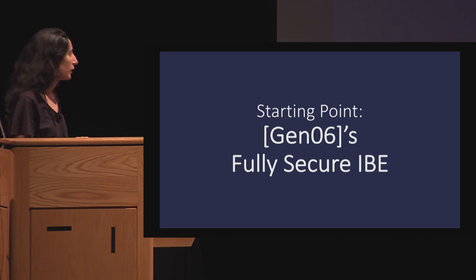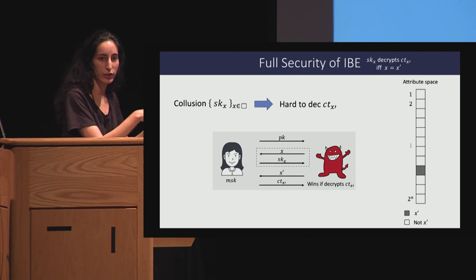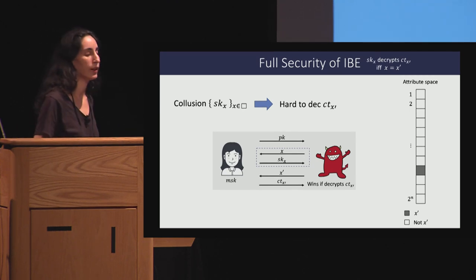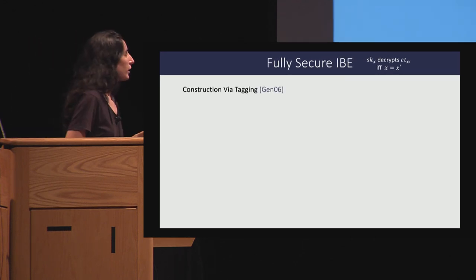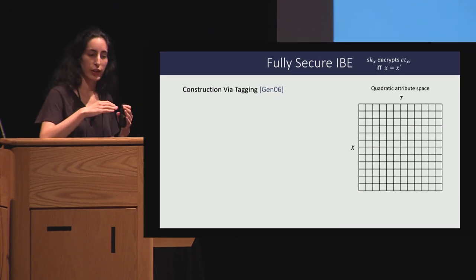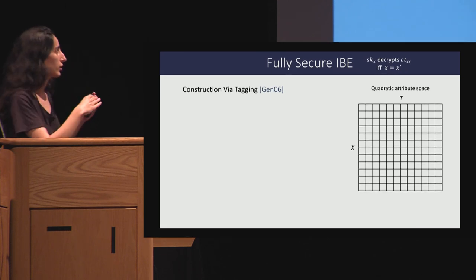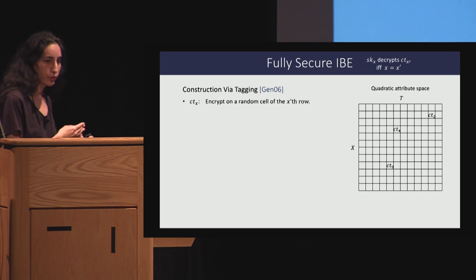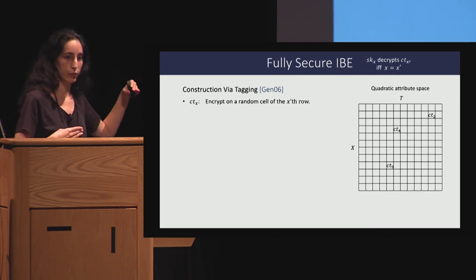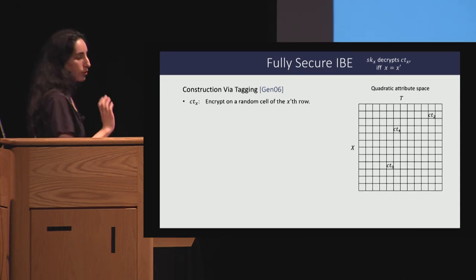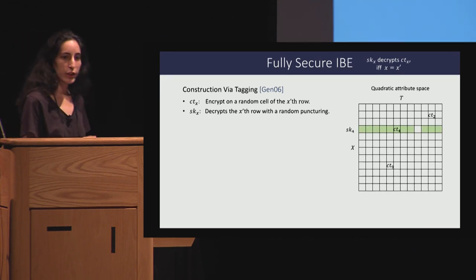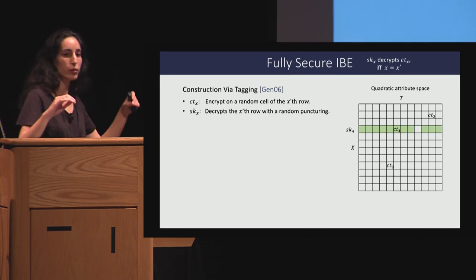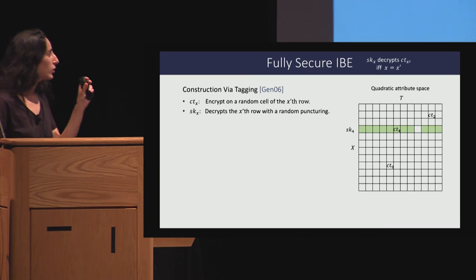Let me describe the tagging idea, focusing on IBE. There is only a single authorized attribute, and the adversary can query keys for all other attributes. The idea: you add another dimension to the attribute space — attributes correspond to rows and tags correspond to columns. When encrypting for some attribute, you go to the respective row and randomly select one column to generate the ciphertext. When generating a secret key, you go to that attribute's row, randomly choose a column, and generate a key that can decrypt the entire row except that column — a punctured key.